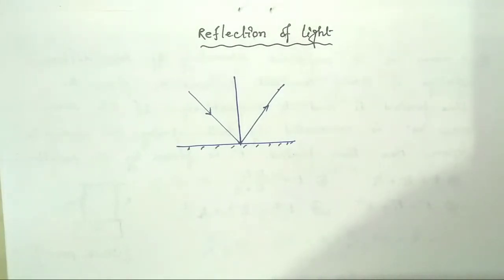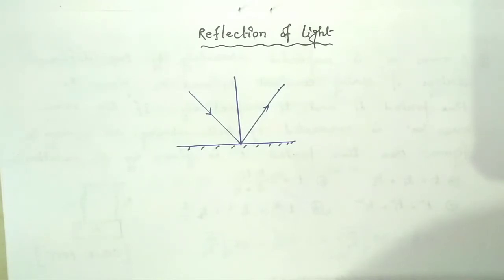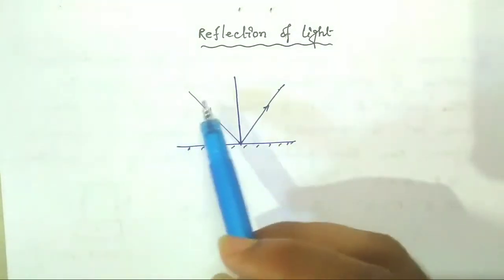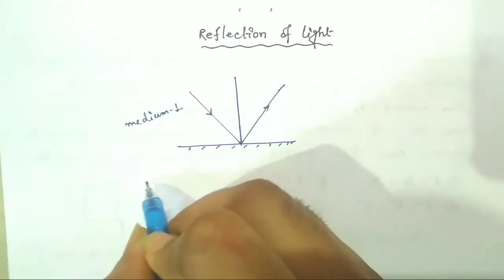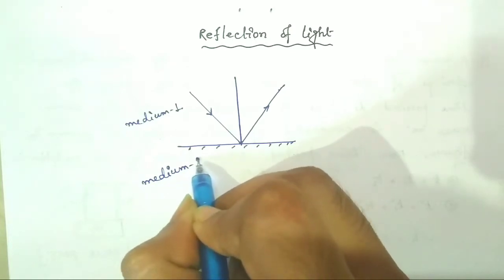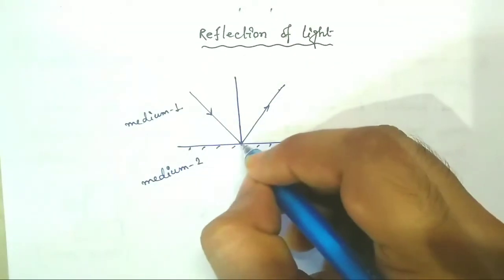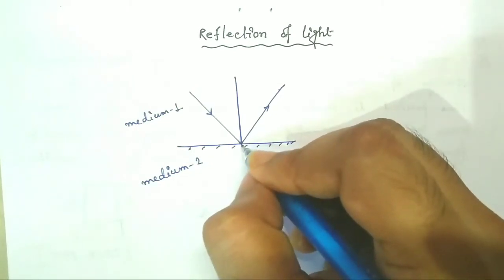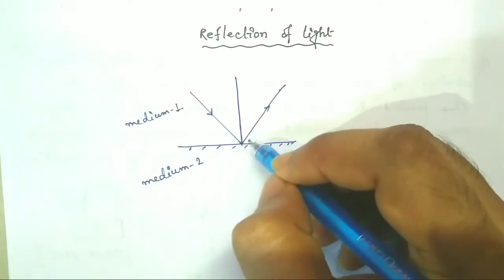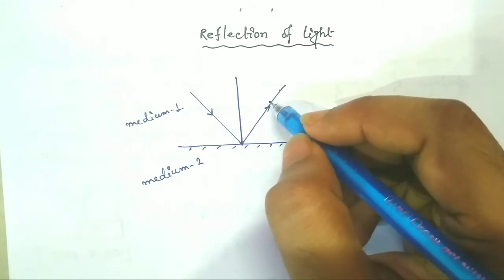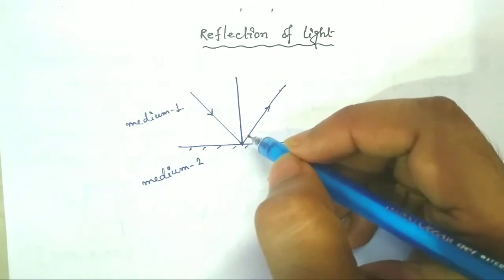Reflection of Light. First of all, we have to know the definition of reflection. Suppose a beam of light traveling in a medium is incident on the surface of separation between two media. Suppose this is my first medium and this is my second medium, and the ray of light is incident on the surface of separation of the two media. Then, if a portion of the incident light is turned back to the first medium, this phenomenon is called the reflection of light.